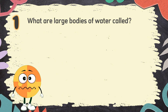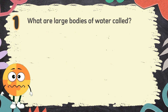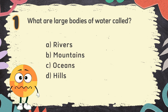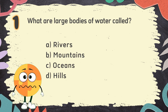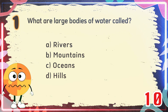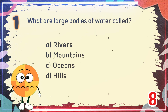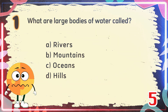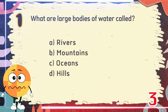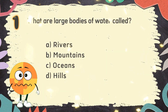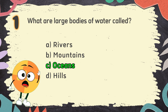Number 1: What are large bodies of water called? The choices are: A. Rivers, B. Mountains, C. Oceans, D. Hills. The correct answer is C. Oceans.